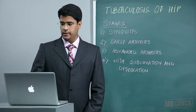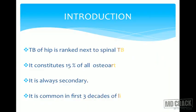One is the tuberculosis of the hip joint. In the introduction, tuberculosis of the hip ranks only next to spinal tuberculosis. It constitutes around 15% of all osteoarticular tuberculosis. It is always secondary — the primary will be from the lungs — and it is mostly common in the first three decades, that is around up to 30 years of life.